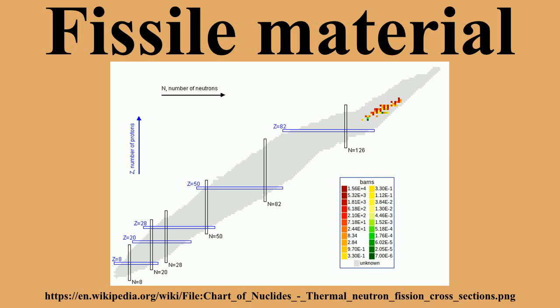Therefore, uranium-235 is a fissile material. By contrast, the binding energy released by uranium-238 absorbing a thermal neutron is less than the critical energy.